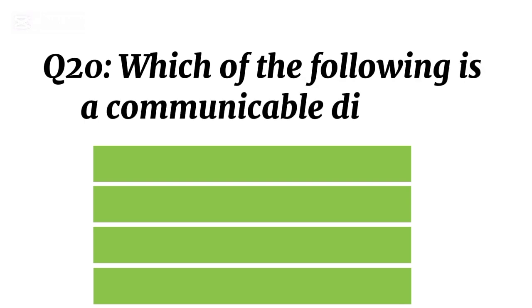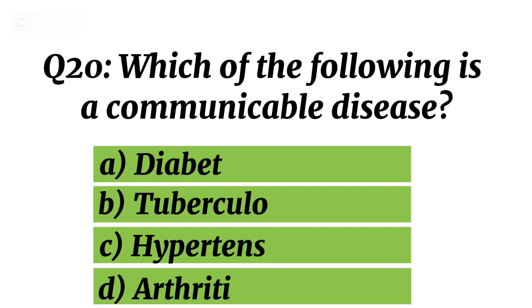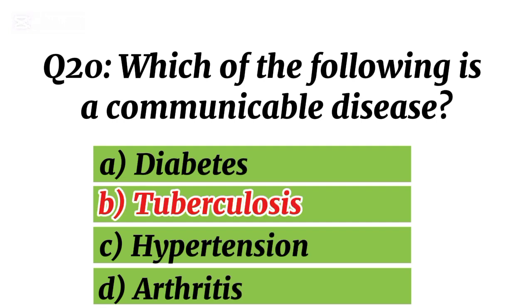Question 20. Which of the following is a communicable disease? Correct option B. Tuberculosis.